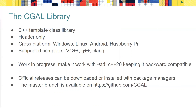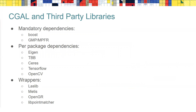How to obtain CGAL: we make releases available as tarballs. It can be installed with package managers on Fedora, Debian, Brew, and vcpkg, and you can also clone it from GitHub.